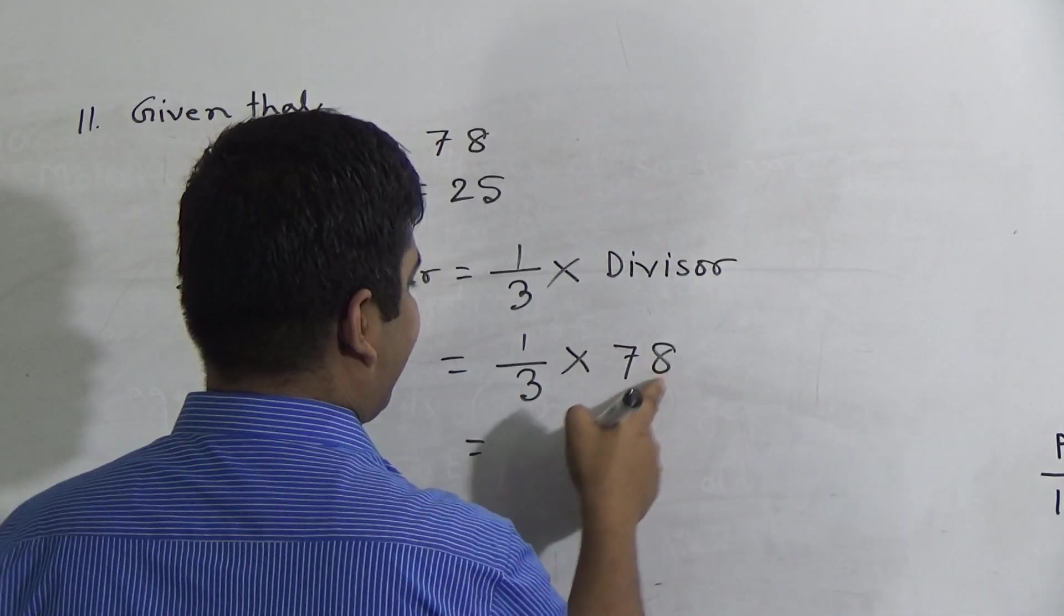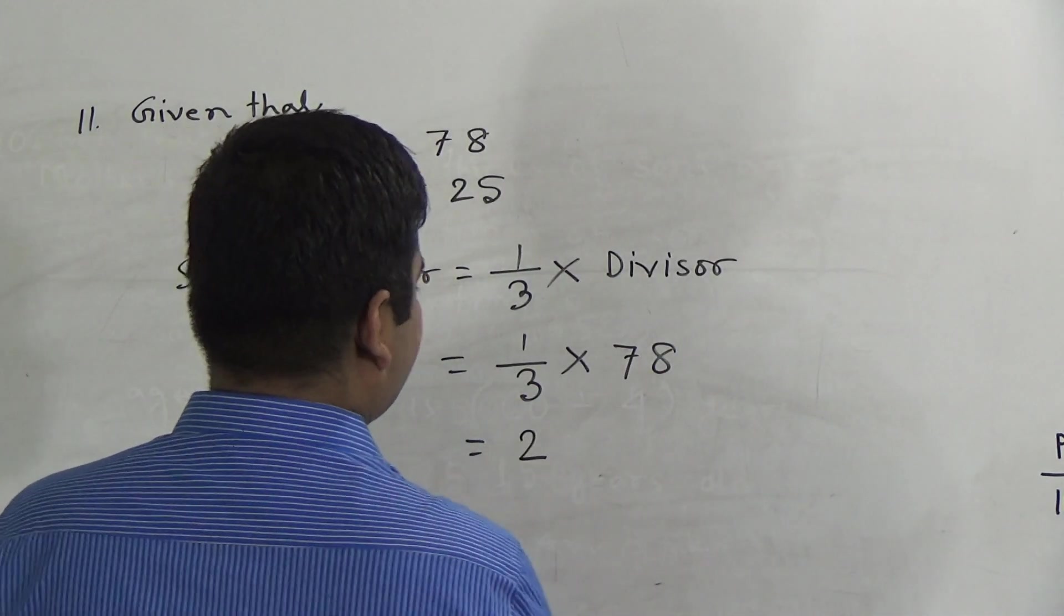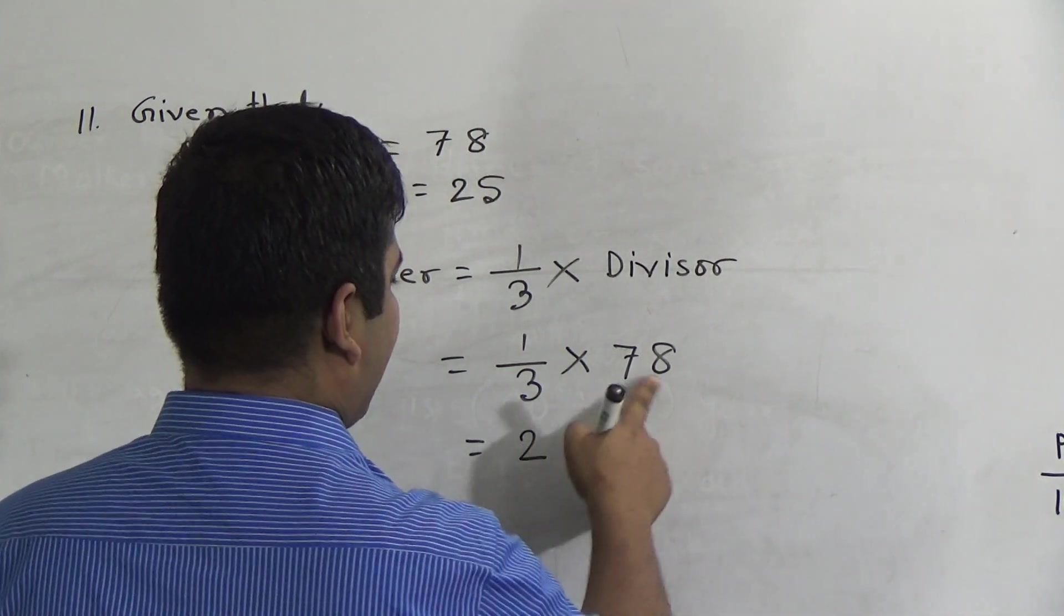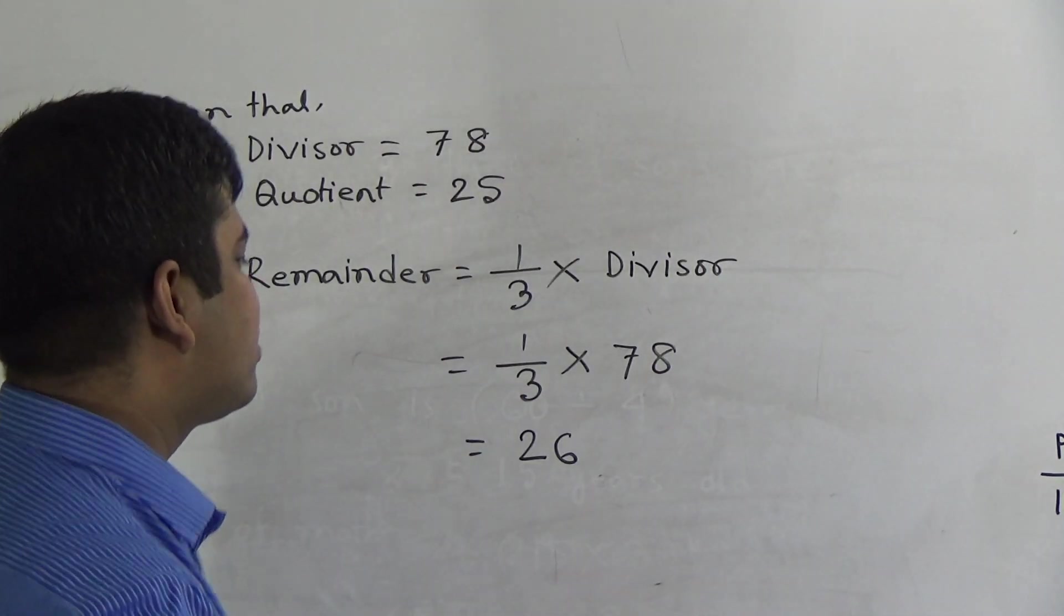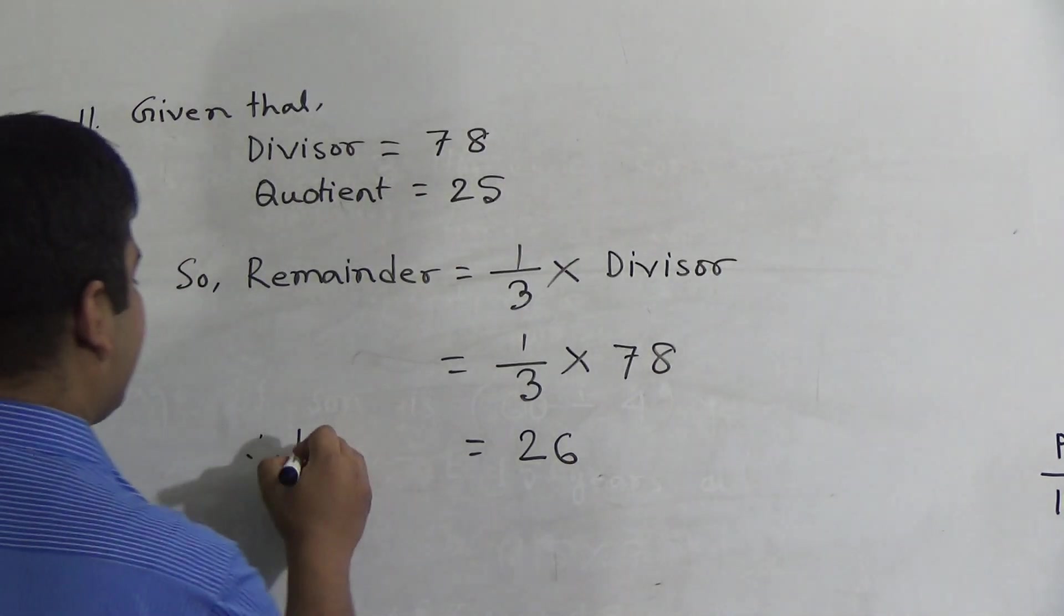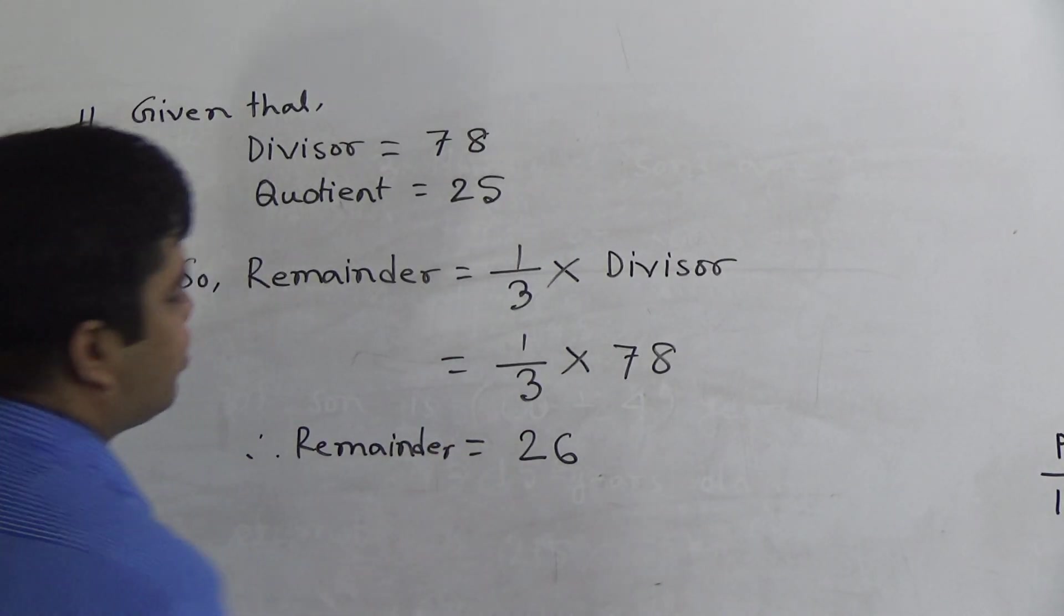So reminder is one third of the divisor. So one third of the divisor 78 divided by 3. We divide this 78 by 3 and we get: 3 twos are 6, carrying 1 to 18, 3 goes in 6 times. So reminder is 26. Therefore, we write reminder equals 26.